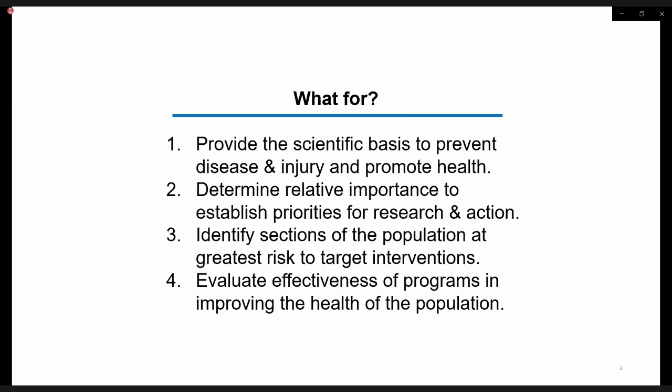Point three: by identifying the needed measures of disease occurrence, the section of the population in a given geographical region that has the greatest risk can also be identified for the most needed interventions. If the population with the greatest risk is identified in a given region, then the evaluation of program effectiveness to improve the health of the population can be more relevant and meaningful.